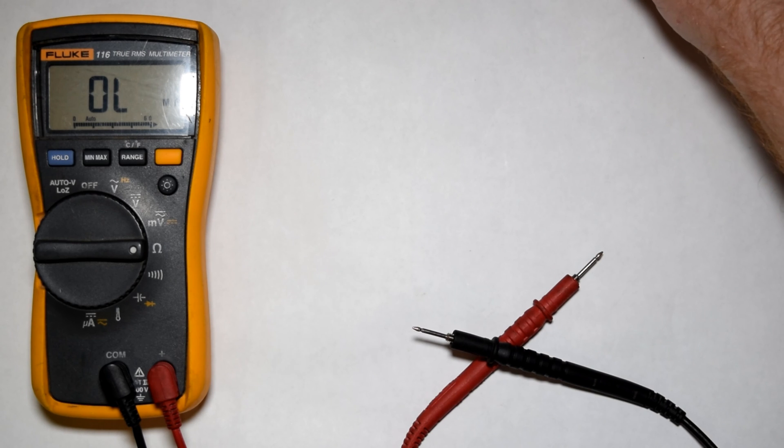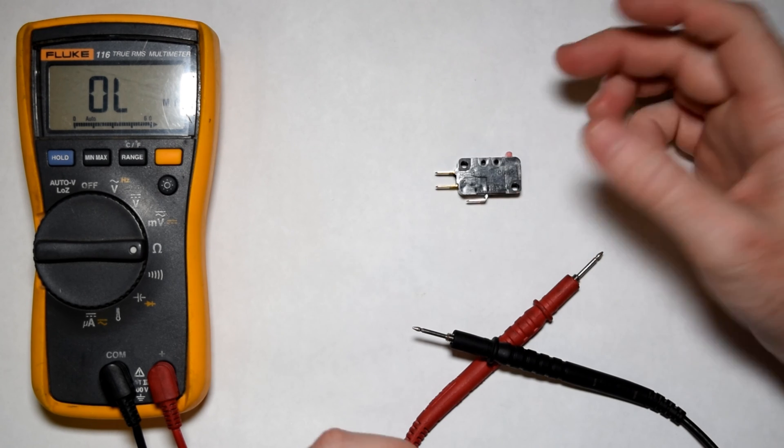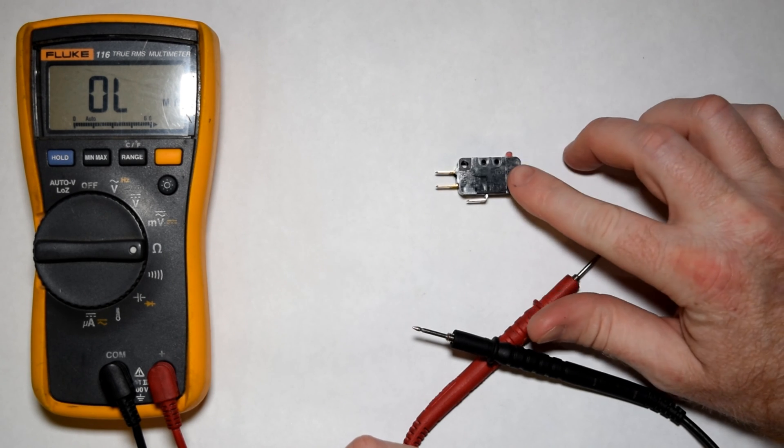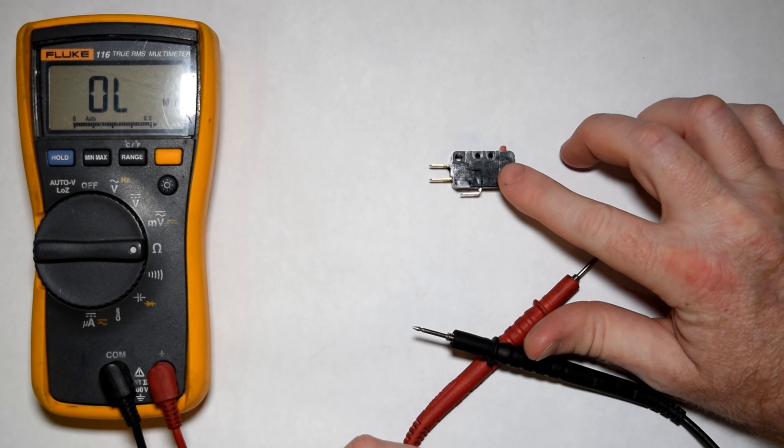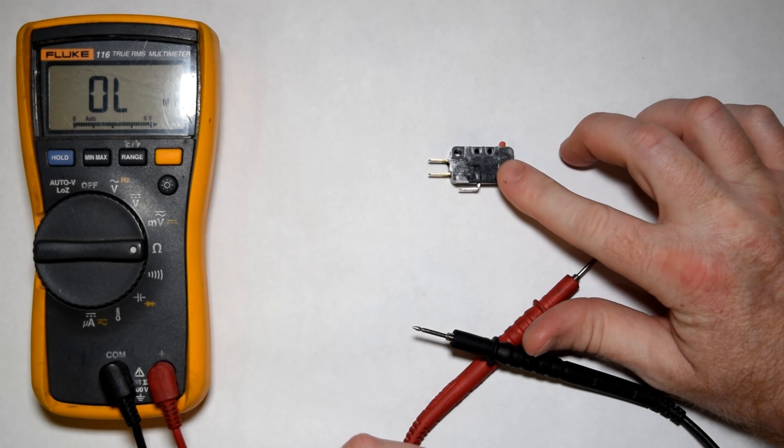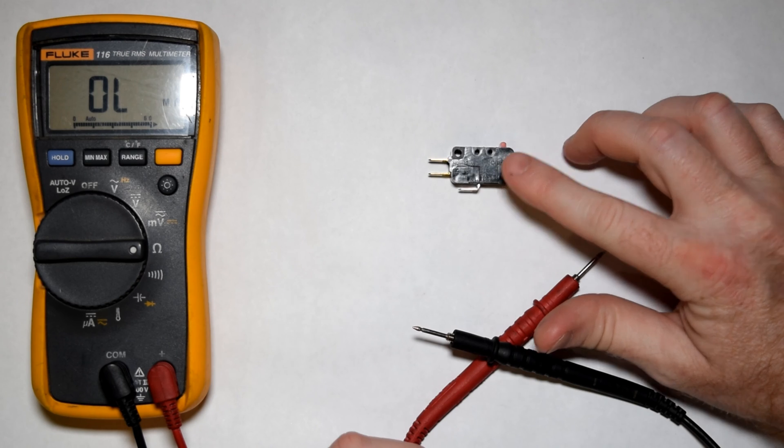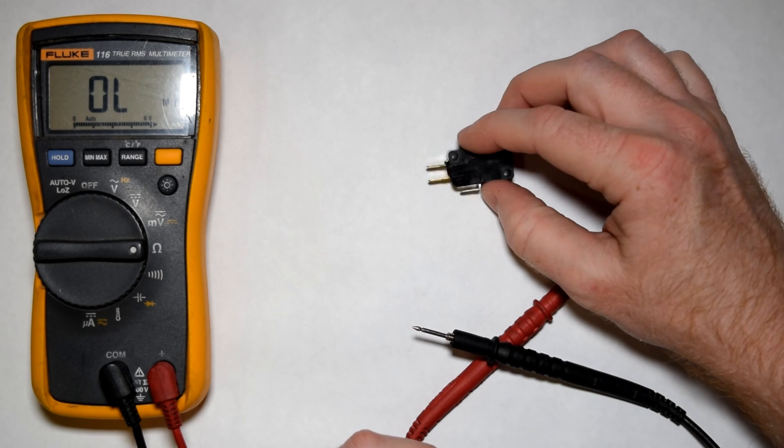So that's just one example. Another super common part that you'll find is a micro switch. Anything from float switches for your dishwasher to door switches to you name it. They're used everywhere.